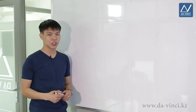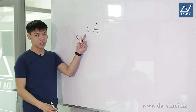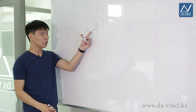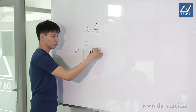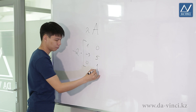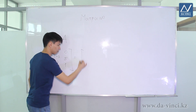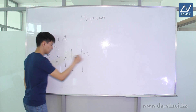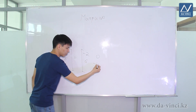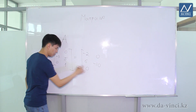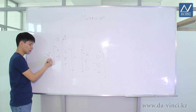Another important operation with matrices is multiplication of a matrix by a number. Say we have matrix A and multiply it by some number lambda. To multiply a matrix by a number, you need to multiply each element of the matrix by that number. For example, multiplying minus 2 by a matrix: minus 2 times 1 equals minus 2; minus 2 times 0 equals 0. In order to multiply a matrix by a number, we simply multiply all elements of the matrix by that number.